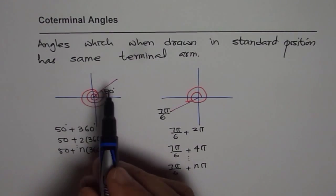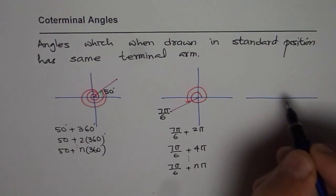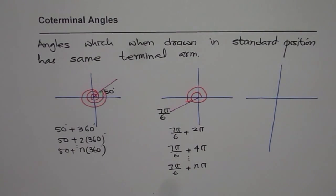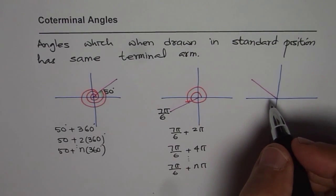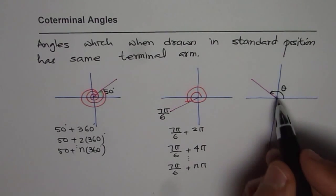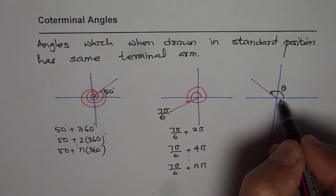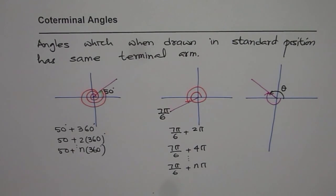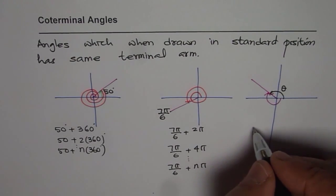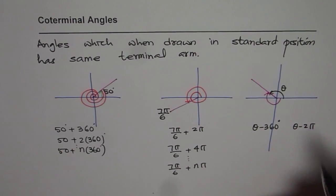There is another way of reaching the same terminal arm — you can go in the negative direction, clockwise. So let's say we have a general angle theta. A co-terminal angle going the other way would be theta minus 360 degrees. In radians, that would be theta minus 2π.